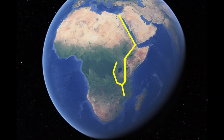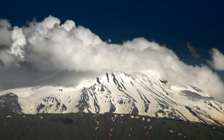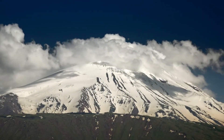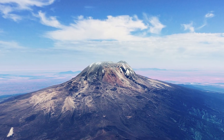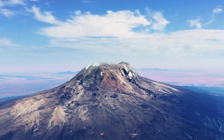The rift itself is divided into two main segments, each with its unique characteristics. The Eastern Rift, also known as the Gregory Rift, was marked by a series of towering volcanoes, each a testament to the rift's volcanic power. Mountains like Kilimanjaro, Kenya, and Maru rose majestically, their peaks reaching towards the heavens while their volcanic hearts simmered with molten rock.